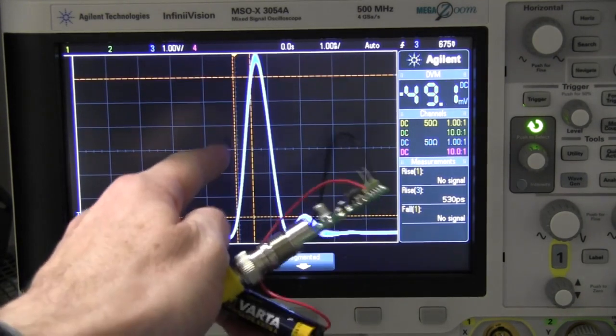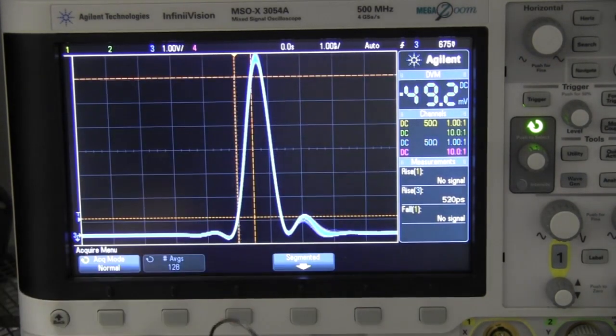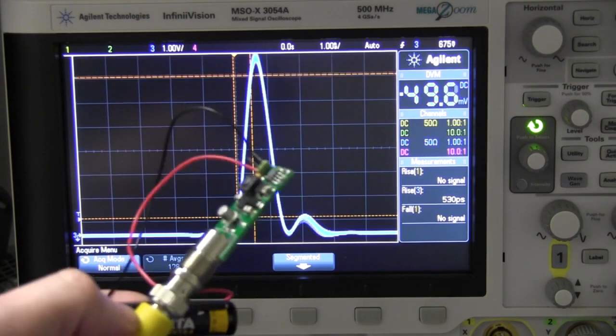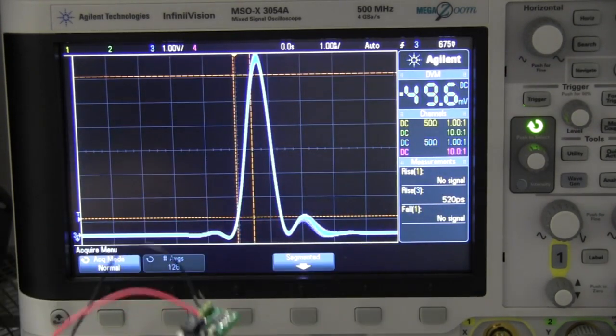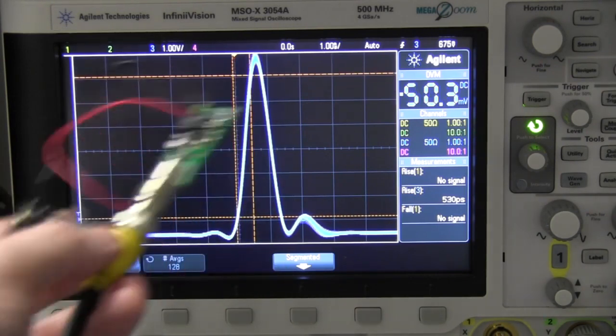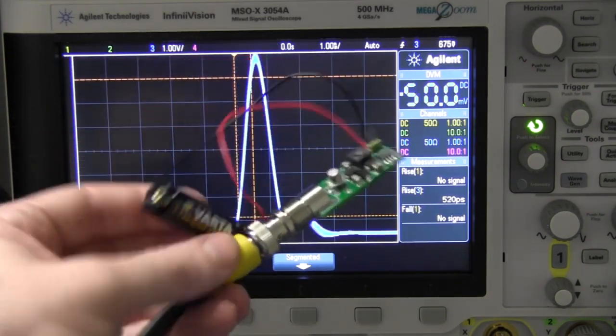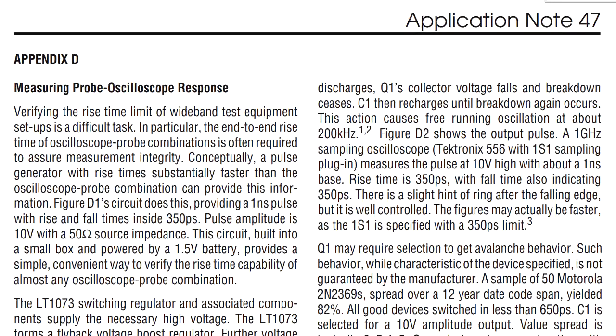And as you can see, it's one, two, three, four, five, six, almost seven volts, six and a half volt pulse there at at least 530 picoseconds. It's likely a lot better than that. So pretty neat.